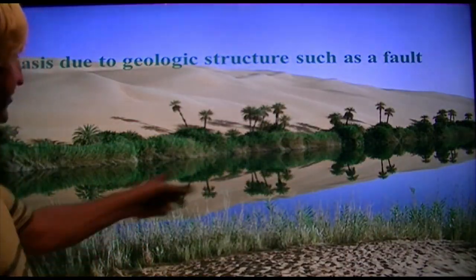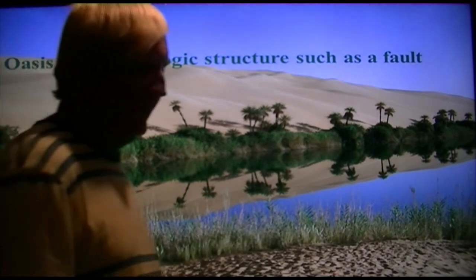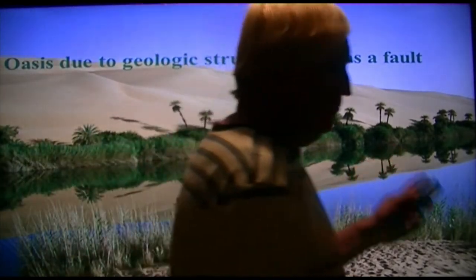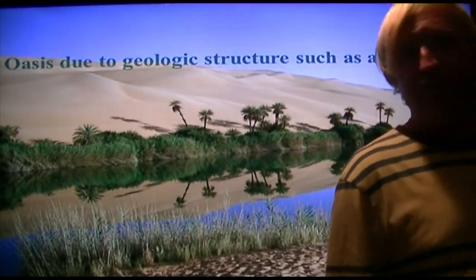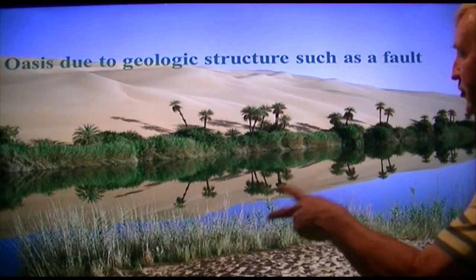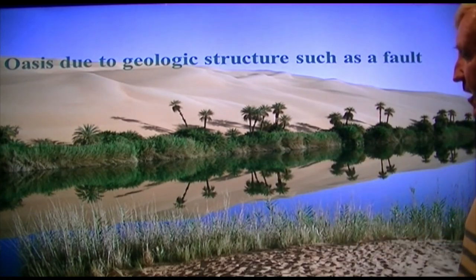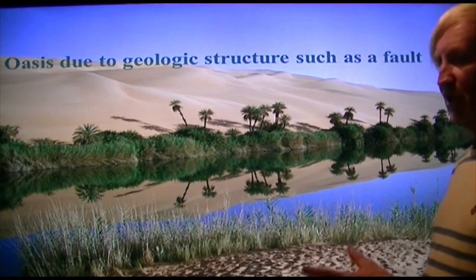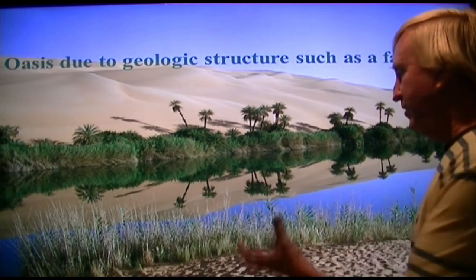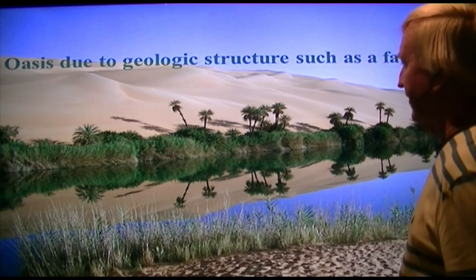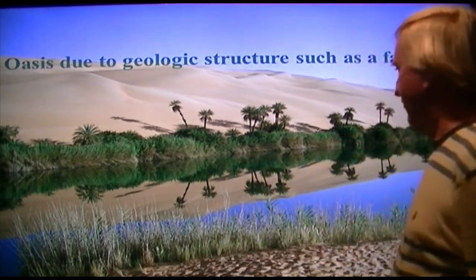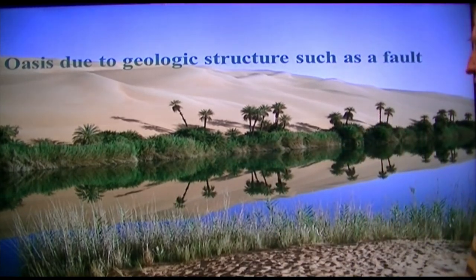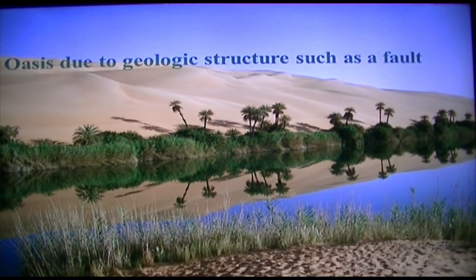Here's an oasis out in the middle of the Sahara Desert. This one emerges because of a change in geology — different rock types. If you have a sandstone and shale come together, the shale won't allow water to penetrate it, and water will flow up through the shale.